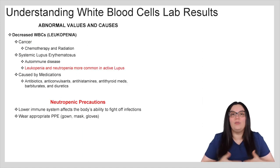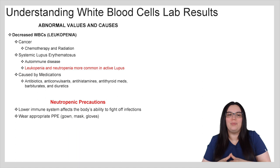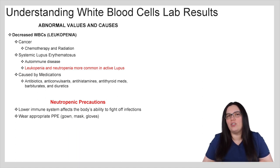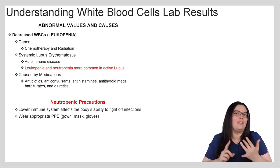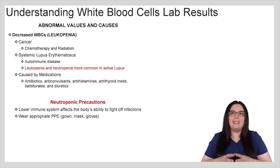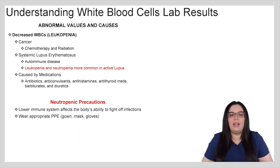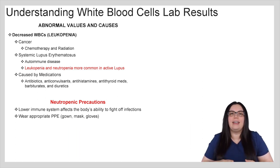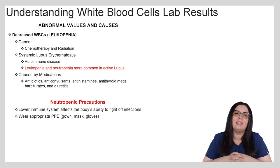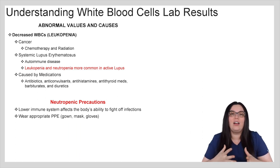On the other end of the spectrum, leukopenia means a decrease in white blood cells. The primary causes include cancer if the patient is receiving chemotherapy or radiation. Systemic lupus is another significant cause — it's an autoimmune disease, and leukopenia and neutropenia are more common when the patient is experiencing active lupus. Additionally, some medications can actually cause a decrease in white blood cells: antibiotics, anticonvulsants, antihistamines, antithyroid medications, barbiturates, and diuretics can all cause a decrease in white blood cell counts.